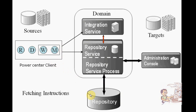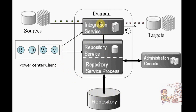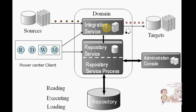The integration service sends the request to the repository database. If the client request is authorized, the repository database sends the response back to the integration service. Based on that, the integration service reads the data from the sources, executes based on the requirement, and finally loads the data into the target tables.